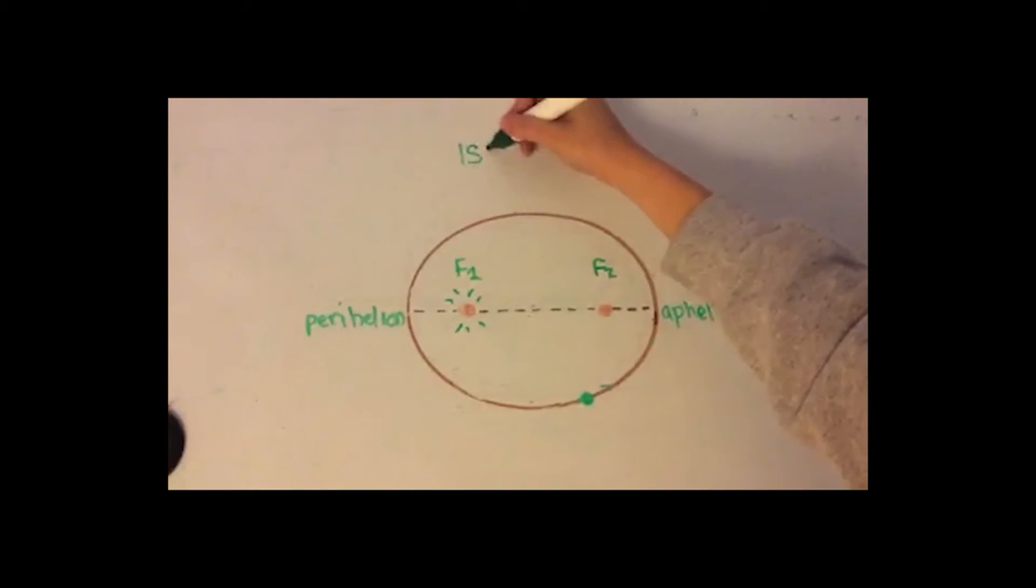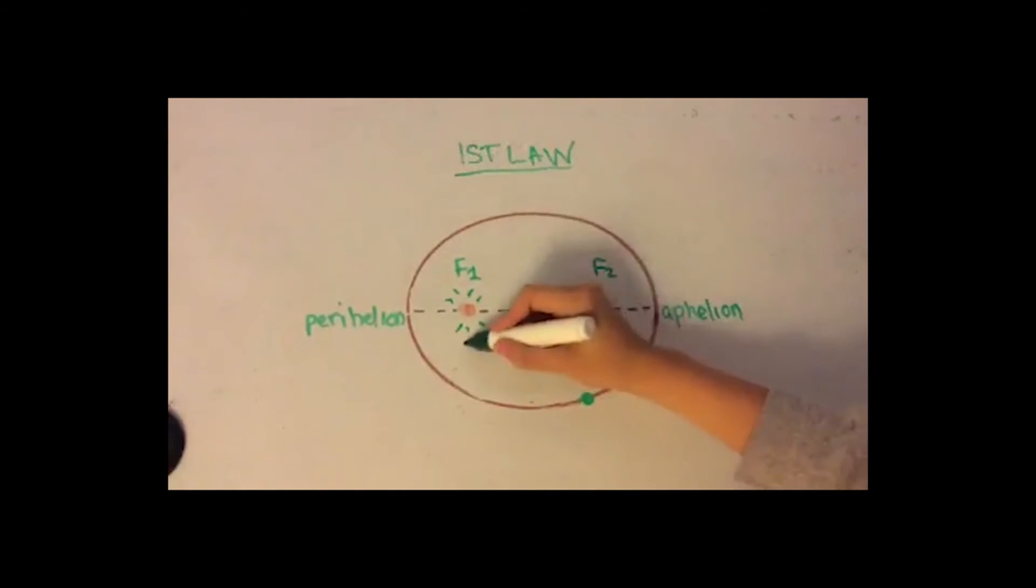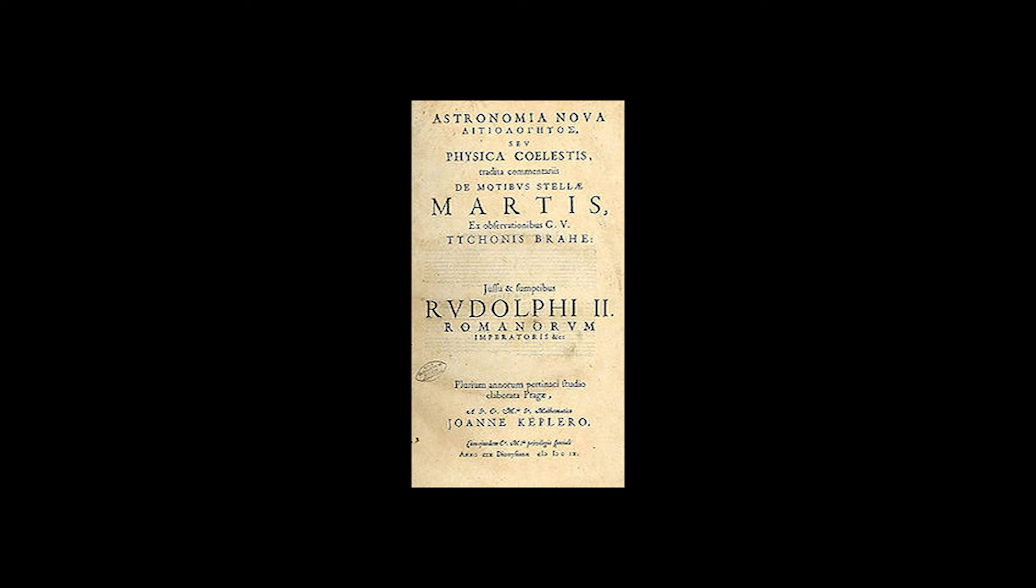Kepler's very first law broke the Copernican model and states that all planets move in elliptical orbits with the sun at one focus of the ellipse. An ellipse has two focuses. As shown in this diagram, the sun is always at one foci with a planet moving along the elliptical path. Kepler's first law was published in 1609 in his book Astronomia Nova.